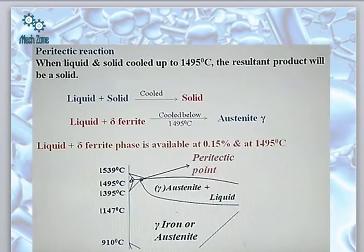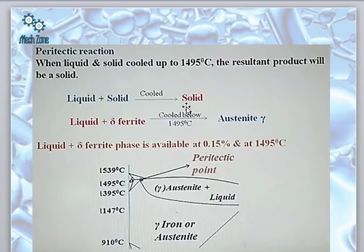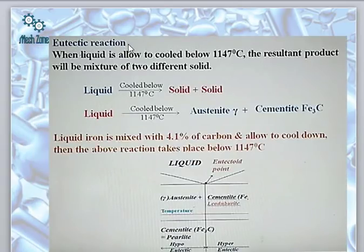Now we define the three reactions. At the peritectic point, when a liquid and a solid are cooled to 1495 degrees centigrade, the resultant product becomes a solid — specifically gamma austenite. So at the peritectic point, liquid plus solid upon cooling produces a complete solid phase, which is gamma austenite.